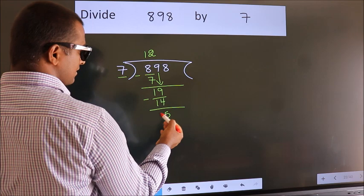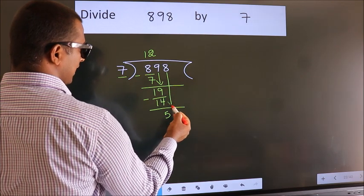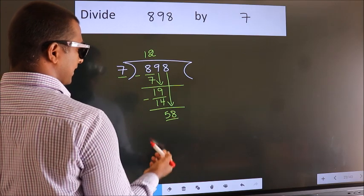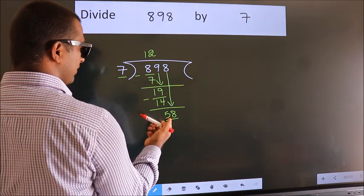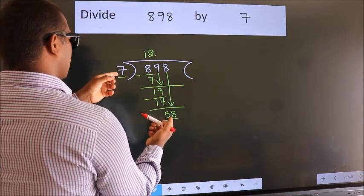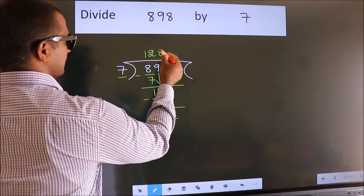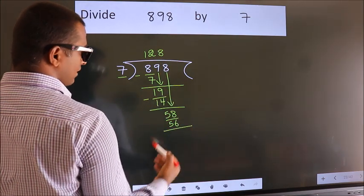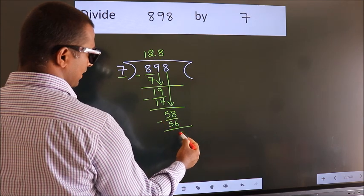After this, bring down the beside number. So 8 down. So 58. A number close to 58 in 7 table is 7 eights 56. Now we subtract. We get 2.